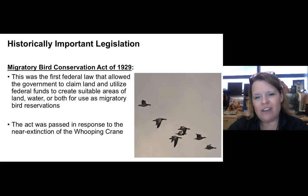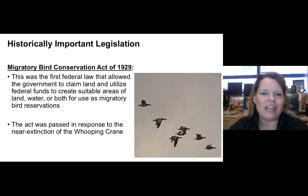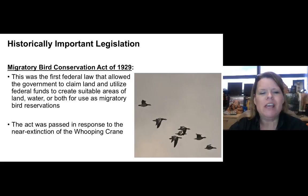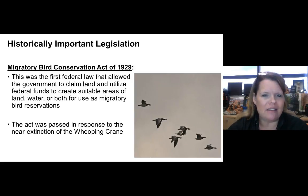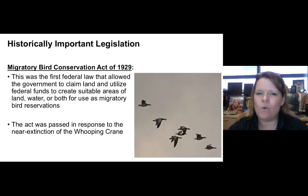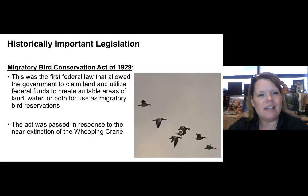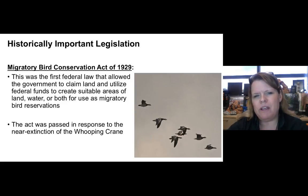The Migratory Bird Conservation Act of 1929 was the next major legislation, passed to protect the whooping crane. This was the first federal law allowing the government to claim land and utilize federal funds to create suitable areas of land, water, or both for use as migratory bird reservations — in other words, the government could take land for public use.